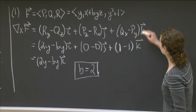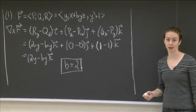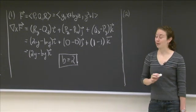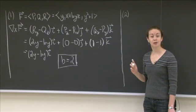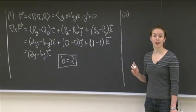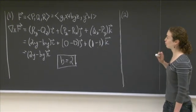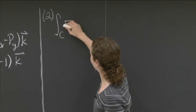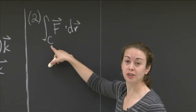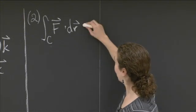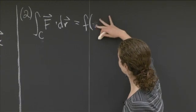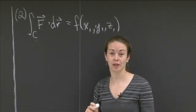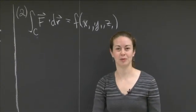Now we move on to part 2: for b = 2, find a potential function. Our strategy will be the method from lecture that is easiest in three dimensions — starting at the origin and integrating F·dr along a curve made up of line segments. We integrate along a curve from the origin to (x₁, y₁, z₁), which gives us the potential function f(x₁, y₁, z₁) plus a constant.